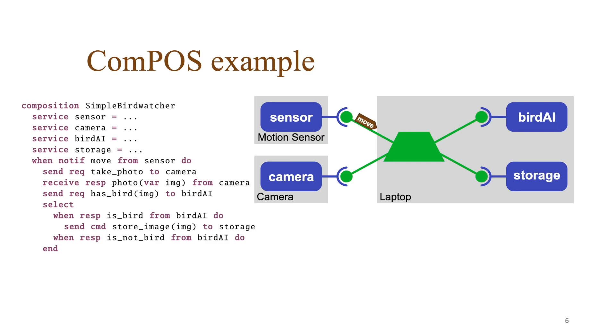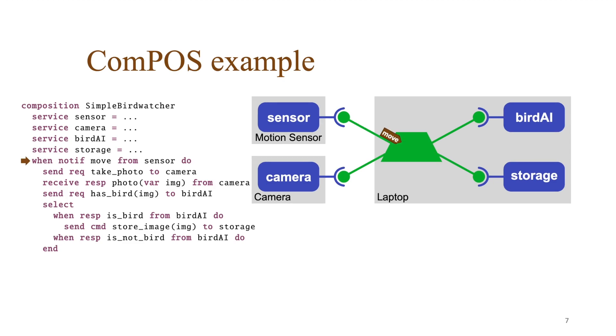The motion sensor detects a movement in the garden and sends a move message. The move message arrives at the composition and matches the outer when. This starts a new so-called reaction. The reaction contains program counters and variable values.